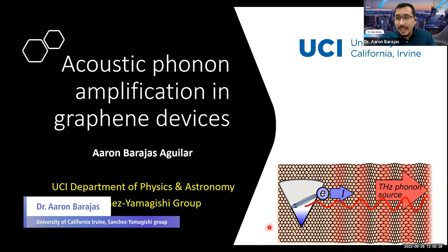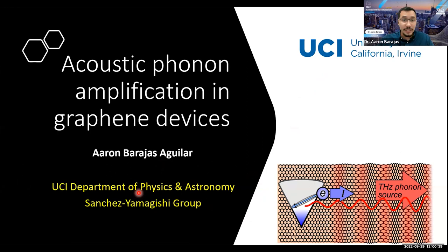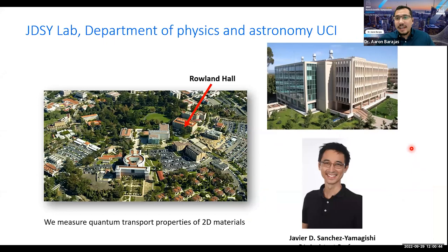Thank you everyone for attending this talk. My name is Aron Barajas. I am currently a postdoctoral researcher in the Department of Physics and Astronomy at the University of California, Irvine, in the Sanchez-Yamagishi group. Our PI is Professor Javier Sanchez-Yamagishi, and we are a group dedicated to measuring quantum transport properties of 2D materials.